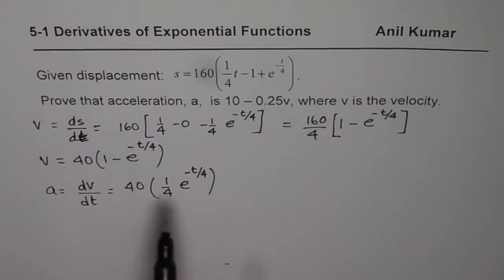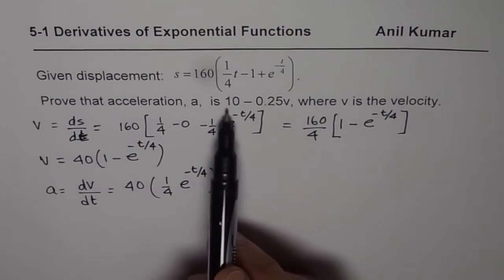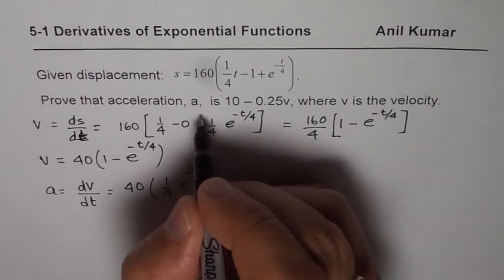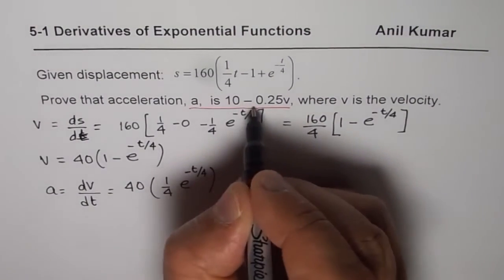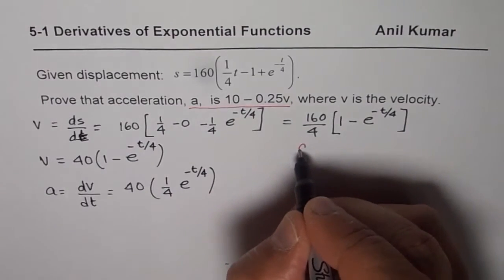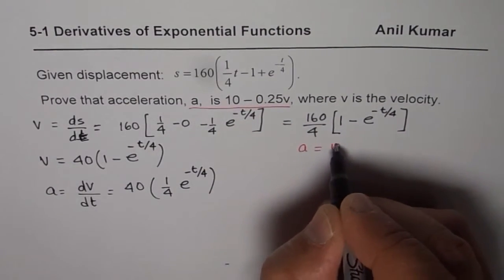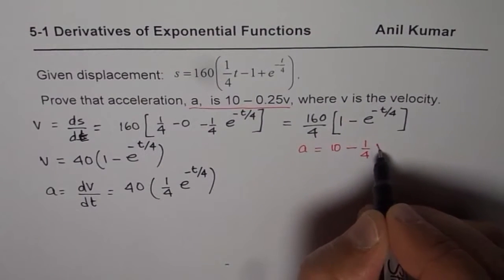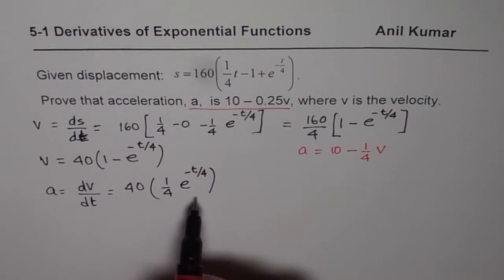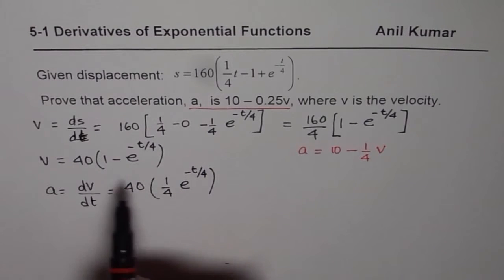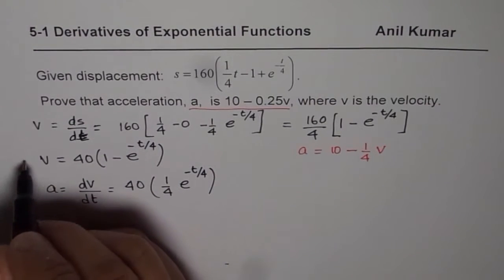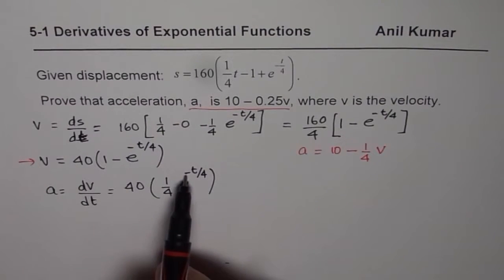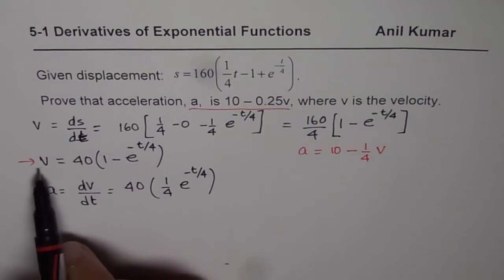But what do we need to prove? We need to prove that acceleration is 10 minus 0.25v, which is a equals 10 minus 1 over 4 times v. The expression we have is not in terms of v, but from the earlier expression we can replace e to the power of minus t over 4 in terms of v.